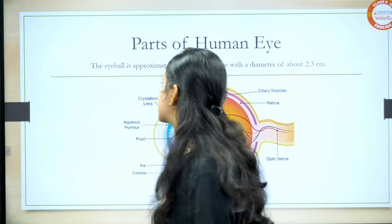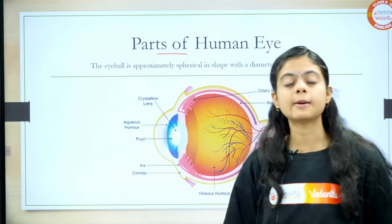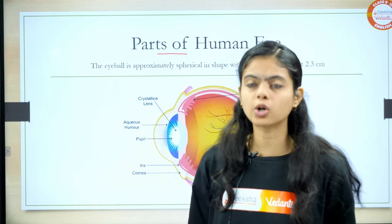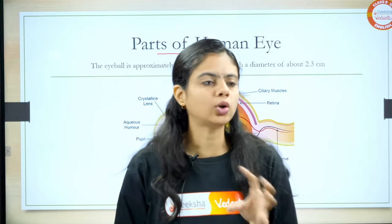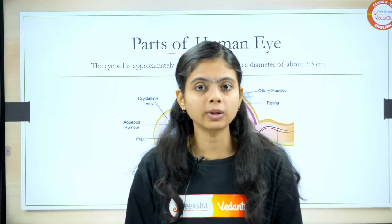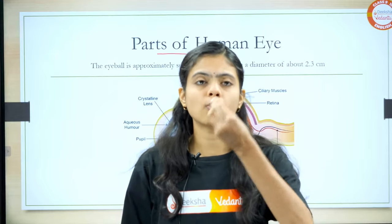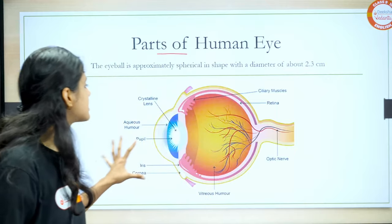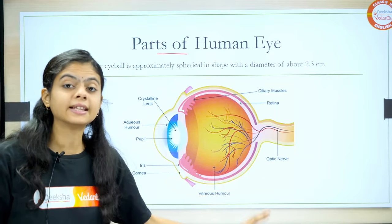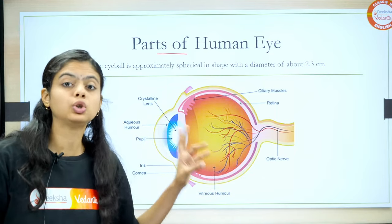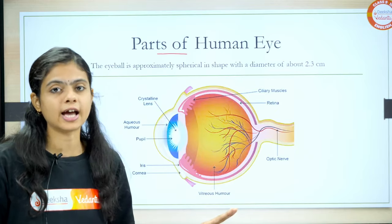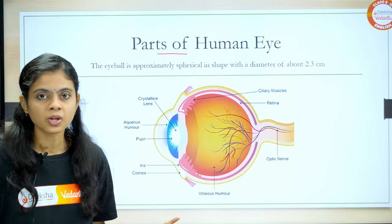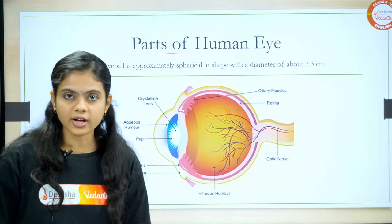Starting with the first concept — parts of the human eye. Before entering how the image is formed in the human eye, we must know what parts are present in our eye. This is a beautiful diagram. In the examination, if they ask you to draw the diagram, draw it very neatly and properly.